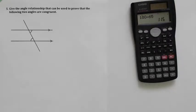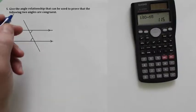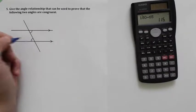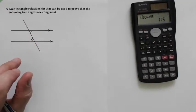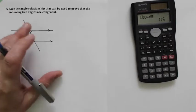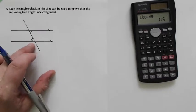Hey guys, number five in angles. Given the angle relationship that can be used to prove that the following two angles are congruent, we know that these two angles are the same as each other and we want to know what's the name of the rule that allows me to say that. So there's a little trick for when we start getting into these mixed up ones here.